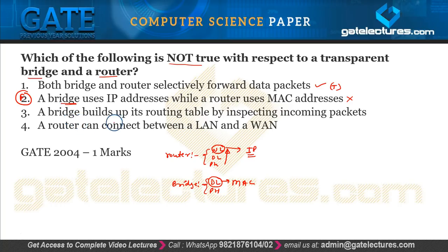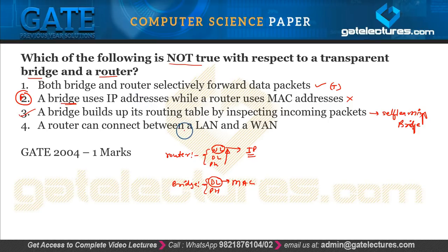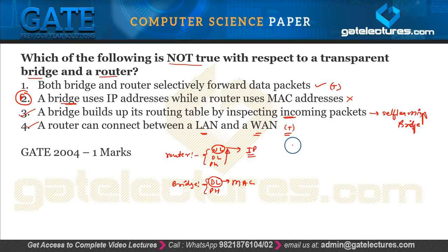Option 3 says a bridge builds its routing table by inspecting incoming packets — this is true because of self-learning bridges, which can build their own routing table by inspecting incoming packets. Option 4 says a router can connect between a LAN and a WAN — that is also true, as a router connects your own network to the internet. Since they ask which is NOT true, only option 2 is false. Options 1, 3, and 4 are true.